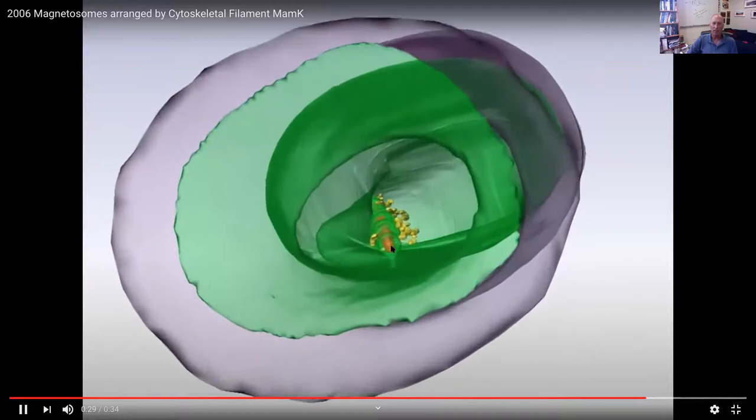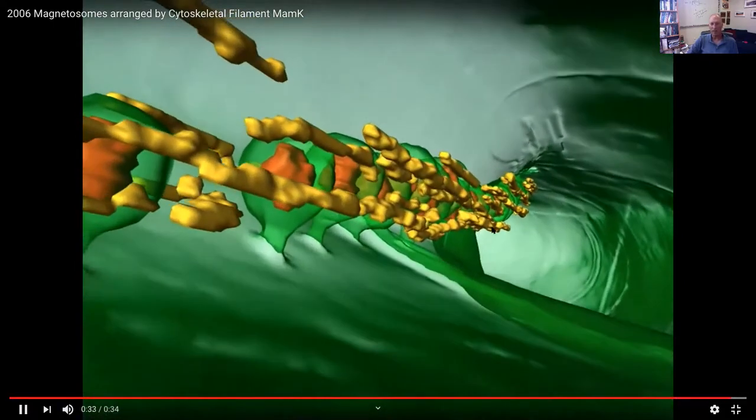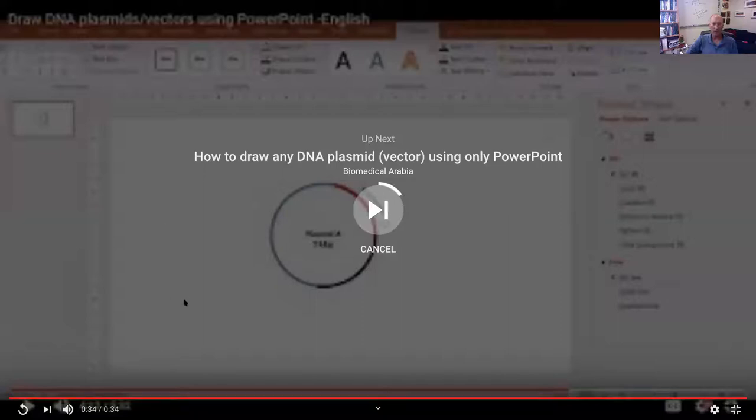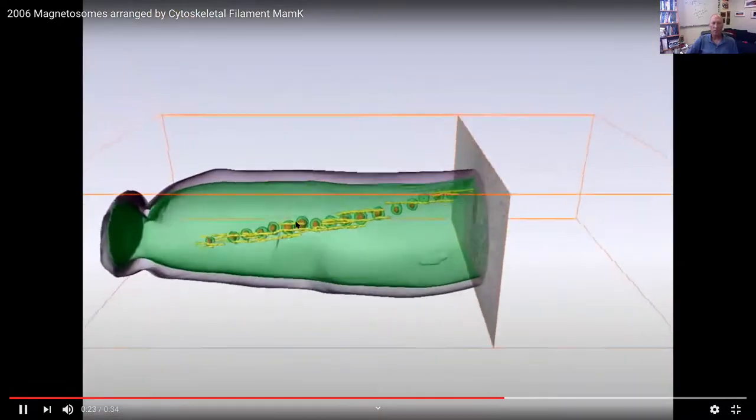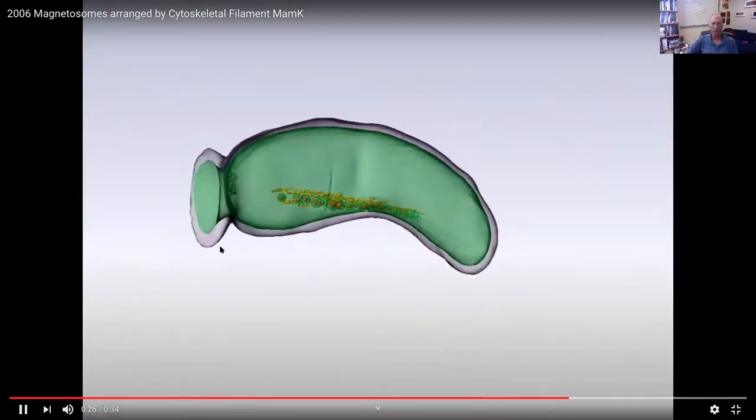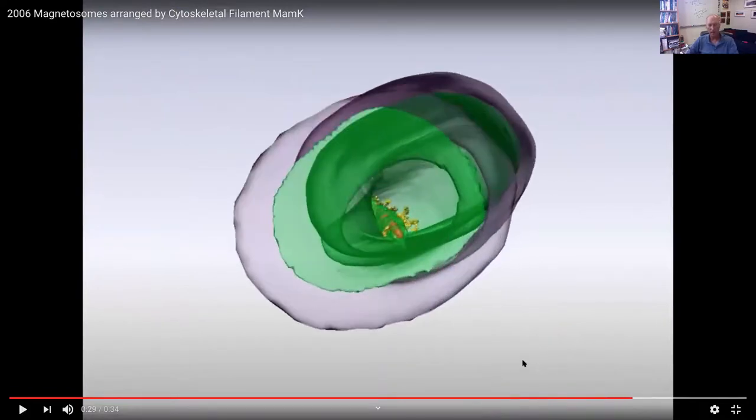And now we're going down the interior of the cell. In red there. Sorry. Let's go back here. In red there was the magnetite crystals and then the membrane was around it in green. So stop there.